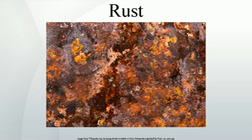Associated reactions. The rusting of iron is an electrochemical process that begins with the transfer of electrons from iron to oxygen. The iron is the reducing agent and gives up electrons, while the oxygen as the oxidizing agent gains electrons. The rate of corrosion is affected by water and accelerated by electrolytes, as illustrated by the effects of road salt on the corrosion of automobiles. The key reaction is the reduction of oxygen.